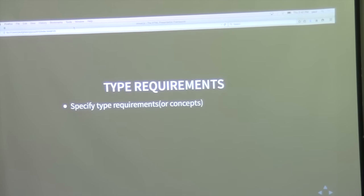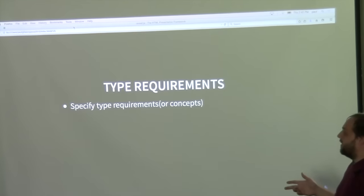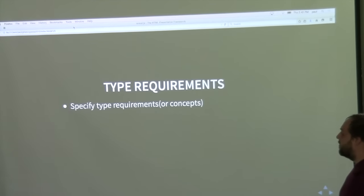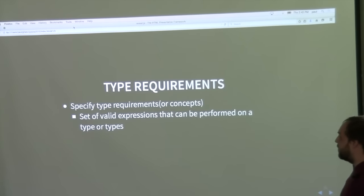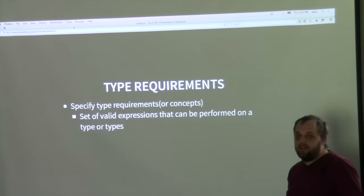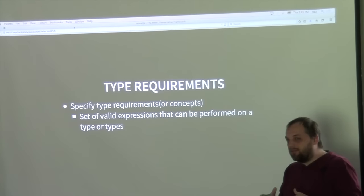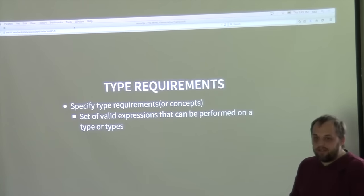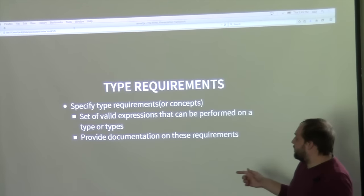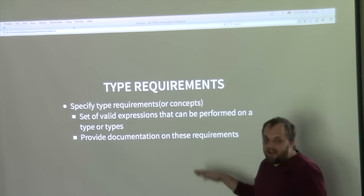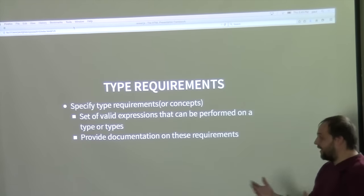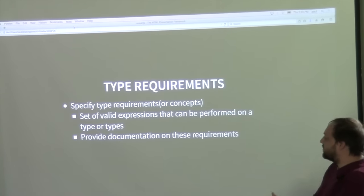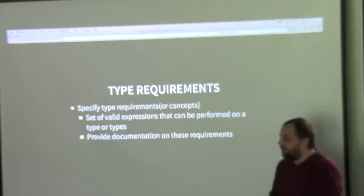One of the ways we fix that is by specifying some kind of type requirements or concepts, which are set up as a set of valid expressions that can be performed on types. They mainly focus on syntactic requirements but are used to try to represent semantic requirements. Right now, a lot of libraries just provide this as a documentation feature — they'll say here are the requirements if you call this generic function.